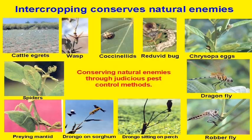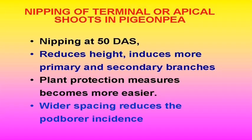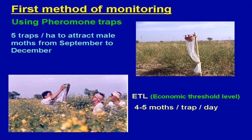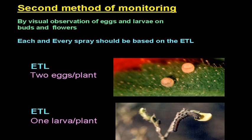Mixed cropping techniques can also be used. Intercropping conserves natural enemies — nearly all intercrop cereal crops help to increase and conserve natural enemies in toor crop. Some techniques to reduce pest infestation include nipping at 50 days after sowing, which reduces height, induces more primary and secondary branches, makes plant protection measures easier, and wider spacing reduces pod borer incidence. For monitoring tools, there are three techniques: pheromone and light traps, visual counting of eggs and larvae, and visual estimation of crop damage.